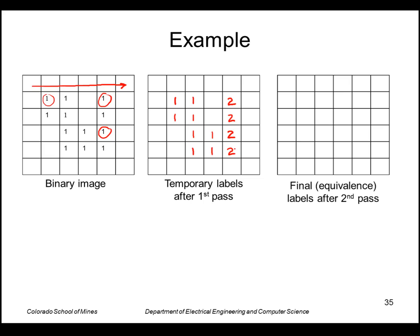So what I'll record though is that I have this equivalence table that says my temporary labels of one and two are actually the same label. I'll call it a new label one.